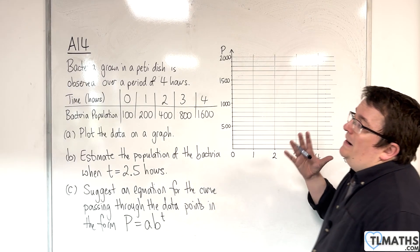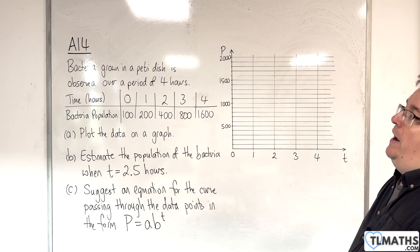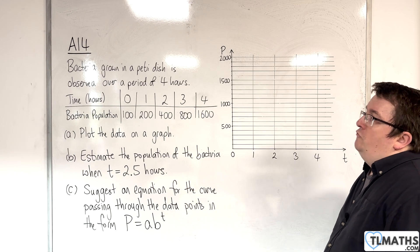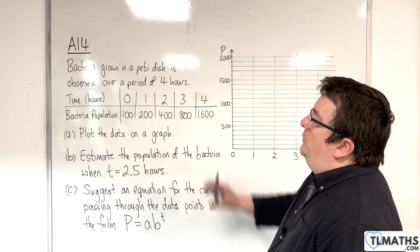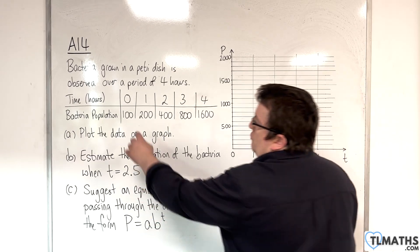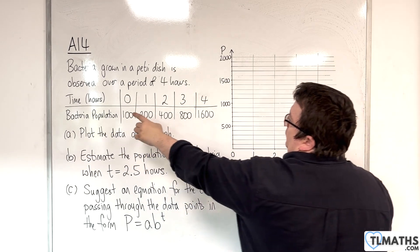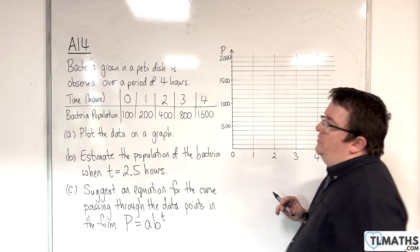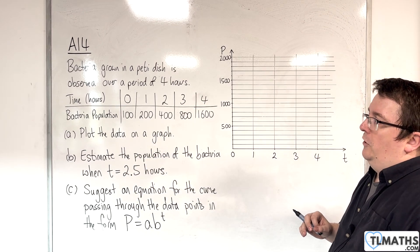In this video, we have bacteria being grown in a Petri dish and it's observed over a period of four hours. Here we have a table of those results, monitoring the bacteria population after each hour, and it's starting with 100 in the Petri dish at time zero.